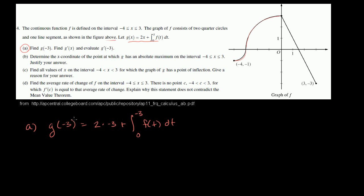So this first part is pretty straightforward. 2 times -3 is -6. And then this part right over here is the definite integral from 0 to -3 of f(t)dt.